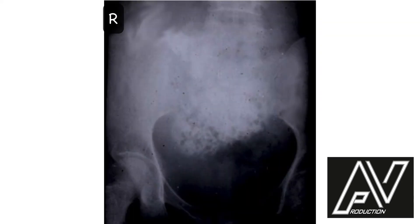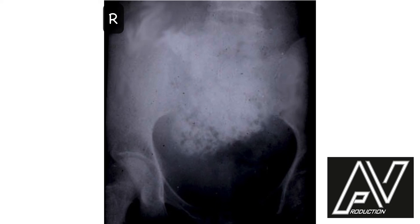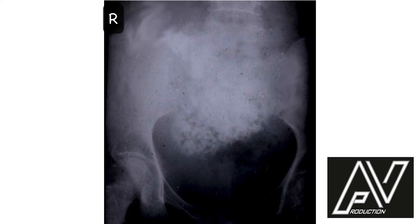This is a special x-ray — hysterography or intrauterine radio-opaque dye study. The dye in the uterine cavity shows multiple filling defects varying in size from a pinhead to a pea, giving it a characteristic honeycomb appearance. Fetal skeletal shadow is absent. Therefore, my diagnosis is obstetric x-ray showing vesicular mole.